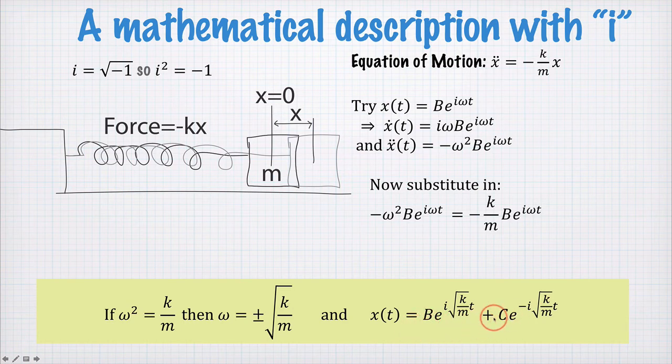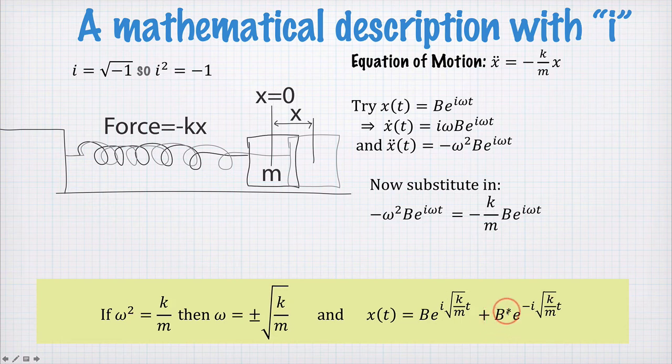Now, if we want to make this a real valued function, we just make C, we force C to be equal to B star. So now we have a function here, B e to the i root k on m times t plus B star e to the negative i root k on m times t. And these two are complex conjugates of each other. Adding two complex conjugates together means that x of t here must be a real valued function.